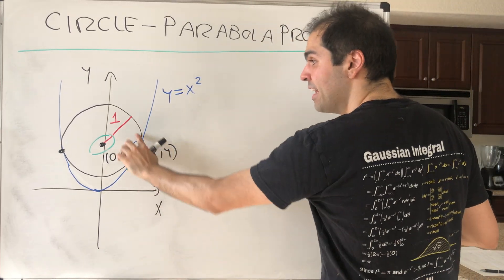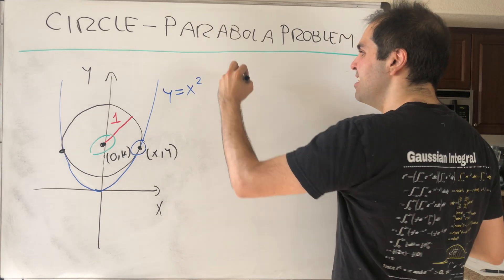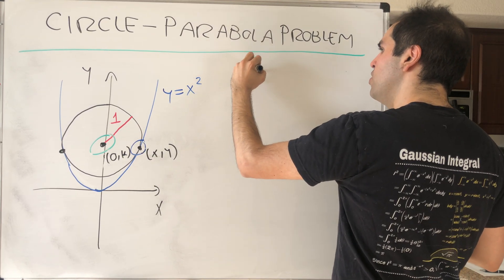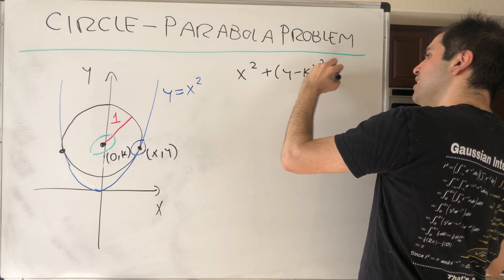Then, on the one hand, (x, y) is on the circle, so it satisfies the equation of the circle, which is x² + (y - k)² = 1.